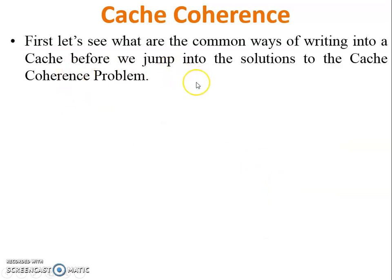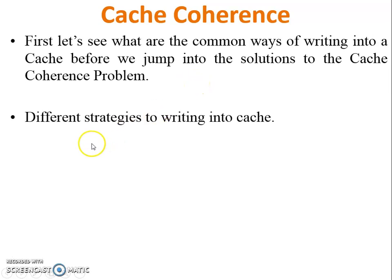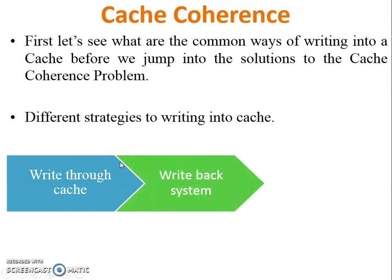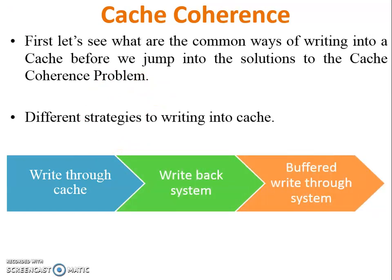To protect data during a cache coherence problem, we look at different strategies for writing into cache memory. The strategies are: write-through cache, write-back system, and buffered write-through system. Let's see each one.